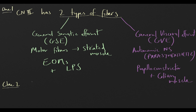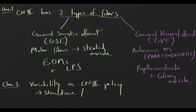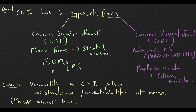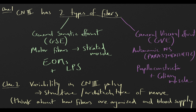The second clue is that the variability in CN3 palsy relates to the architecture of the nerve itself. Consider how the motor and parasympathetic fibers are organized within the nerve bundle, and what kind of blood supply they have — this will explain the different presentations of CN3 palsy. That will be answered in part two.